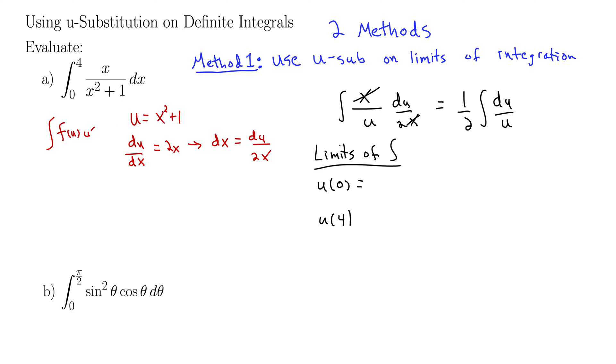What's my u? Well, u is this function here, u is x squared plus 1. So u of 0 is 0 squared plus 1, which is 1. u of 4 is 4 squared plus 1 is 17. So now we bring these limits up to our integral.